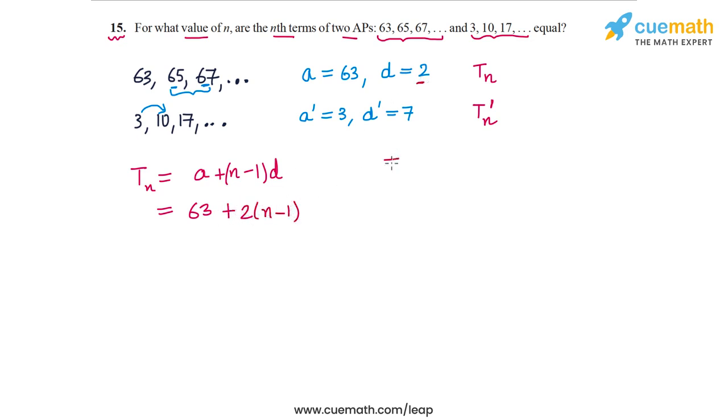And similarly, the nth term of the second AP will be A dash, the first term here, plus (n-1) times the common difference which is D dash. So A dash is 3 and D dash is 7, so 3 plus 7 times (n-1).